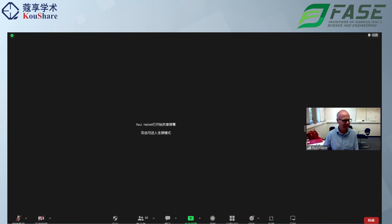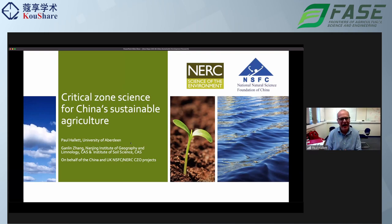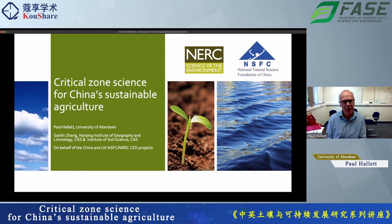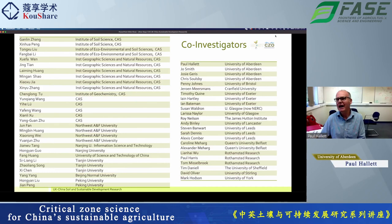My name is Paul Hallett from the University of Aberdeen. I was the coordinator with Ganlin on one of the projects, which is the Red Soil project. What Ganlin and I want to talk about today is not just the project we're involved in, but all of the projects funded underneath this critical zone science program, which is looking at sustainable agriculture. The team was absolutely vast — many people across a range of disciplines in both China and the UK. As is typical to critical zone science, we see geology, biogeochemistry, soil science, atmospheric science, biology, and also social sciences within this.